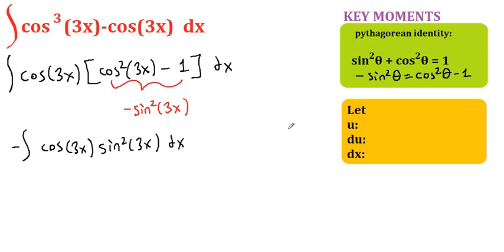Now we're going to apply u substitution. Let u equal sine of 3x. Then du will be the derivative of this. The derivative of sine of 3x is cosine of 3x multiplied by 3 using the chain rule dx. And if you solve for dx in this equation, it's going to be du over 3 cosine of 3x.